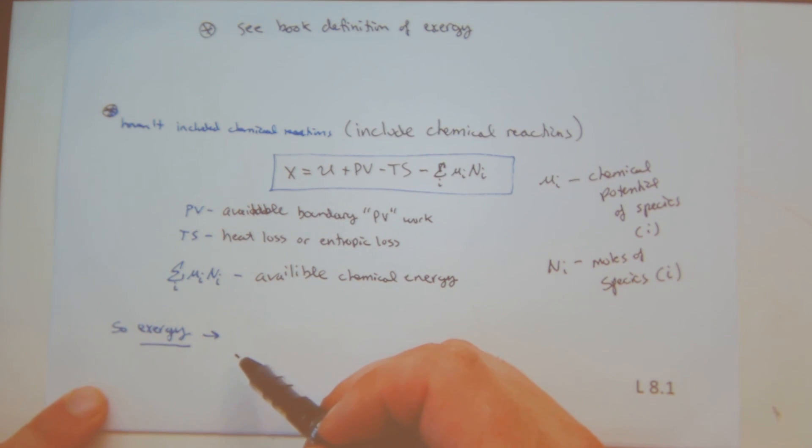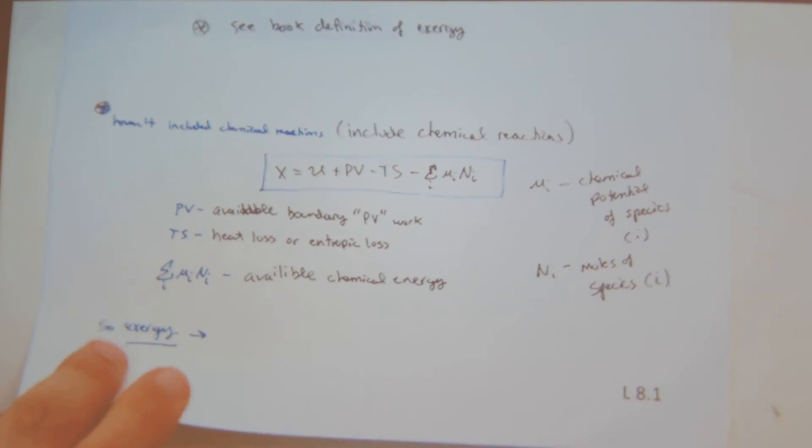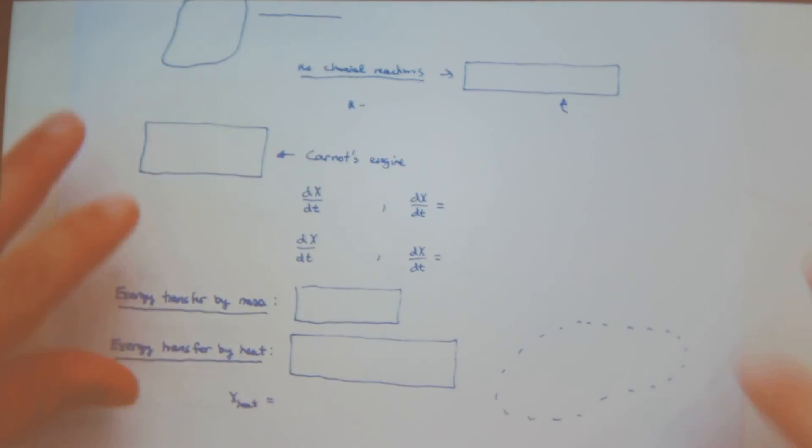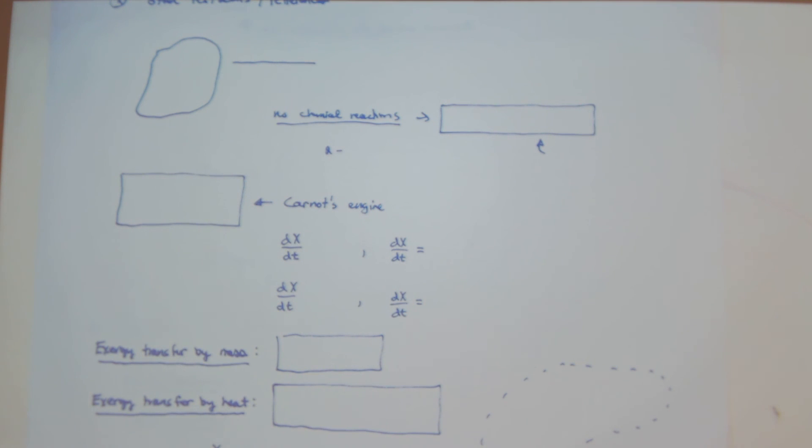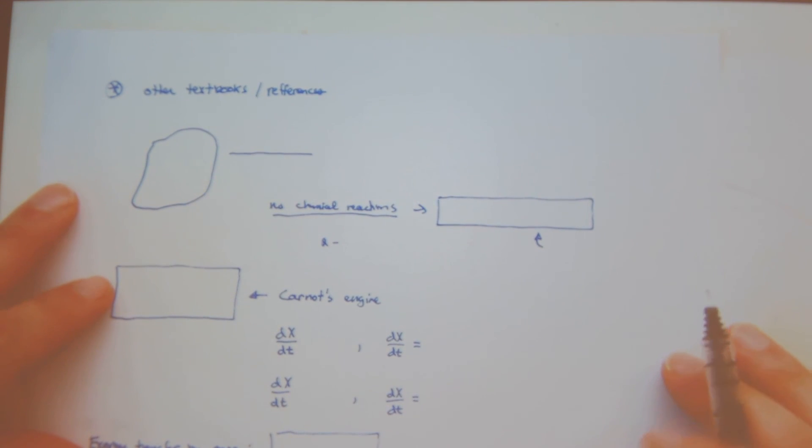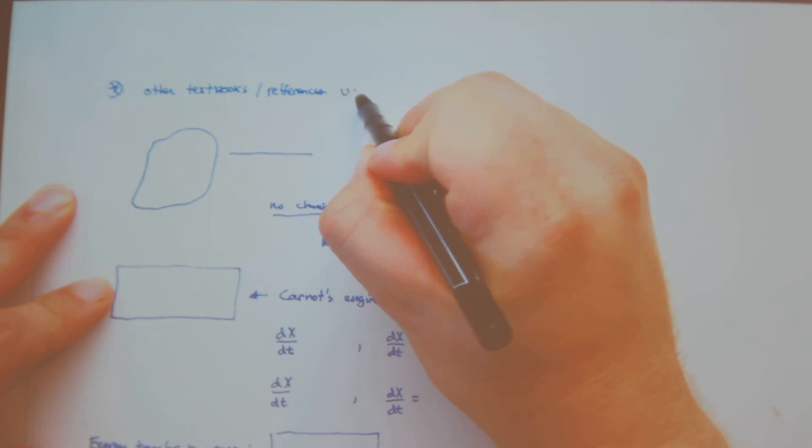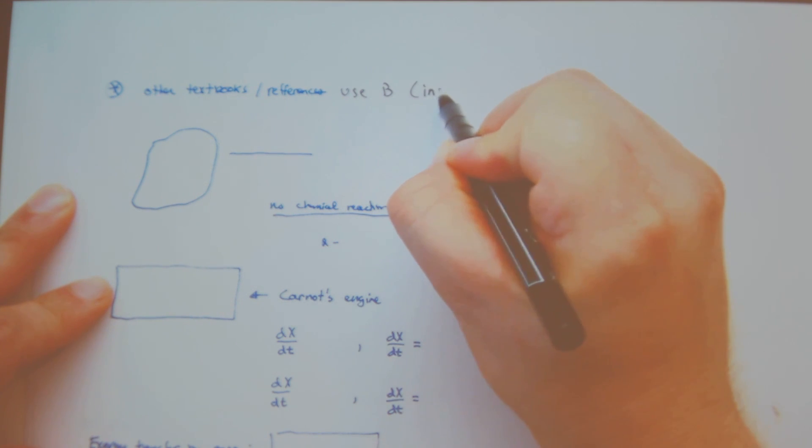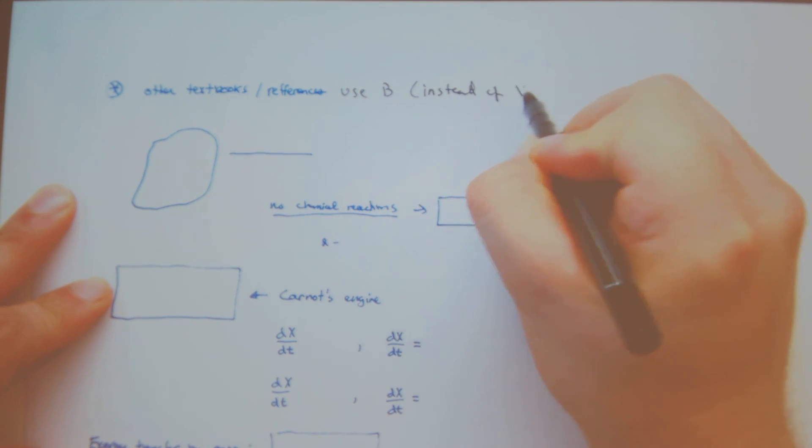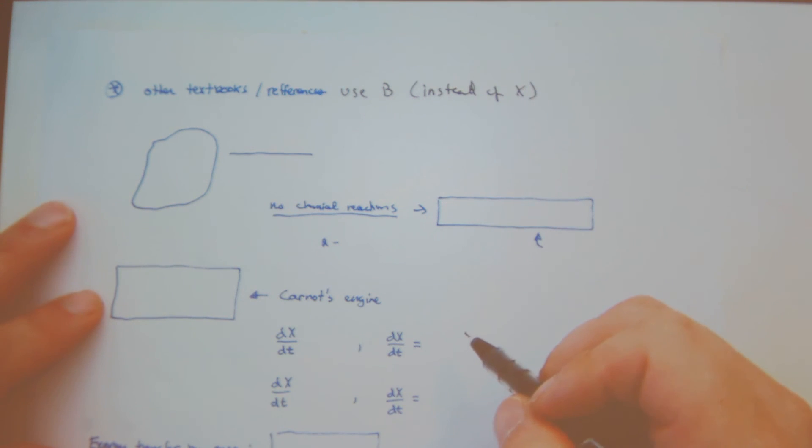So I'm not going to write it out, but in general, the exergy is an energy not associated with boundary work, entropic loss, and chemical energy. So that's a general introduction to exergy. So other textbook references use B instead of X. We will use X.